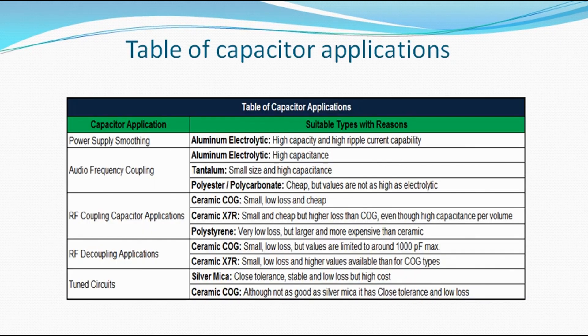Now let's discuss the table of capacitor applications, which involves capacitor applications and suitable types with reasons. For power supply smoothing, we use aluminum electrolytic — a polarized capacitor. It has high capacitance and high ripple current capability. You can also use it in audio frequency coupling.